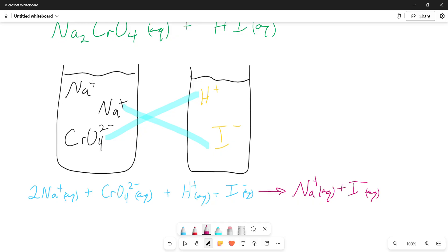Now, one thing about this, when we combine H plus and the chromate CrO4 2 minus, what do we get? Well, we get H2CrO4. What is that?